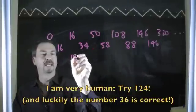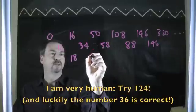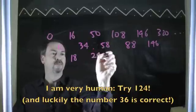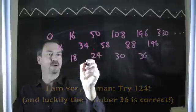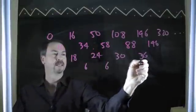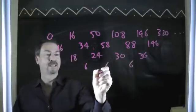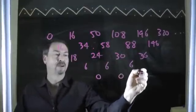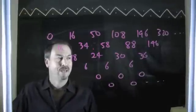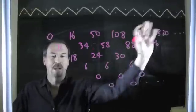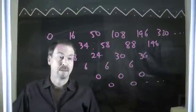Then looking at the third differences: 6, 6, 6. If I trust patterns, I guess it keeps going 6. And the fourth differences would be 0, 0, 0, and so on. I bet I could now work my way back up to the top and figure out the next numbers in the sequence if I play the game of believing in patterns.